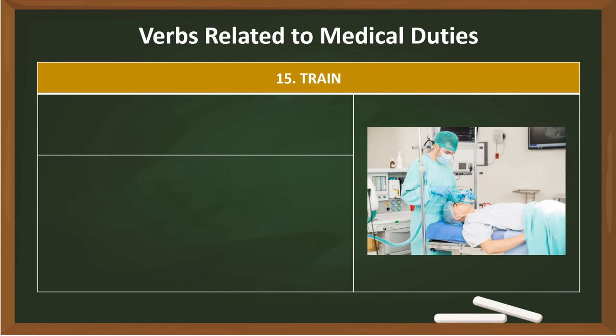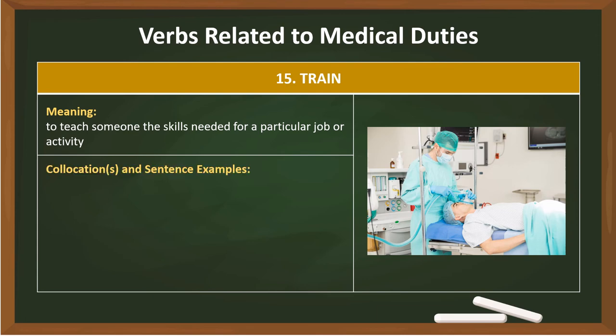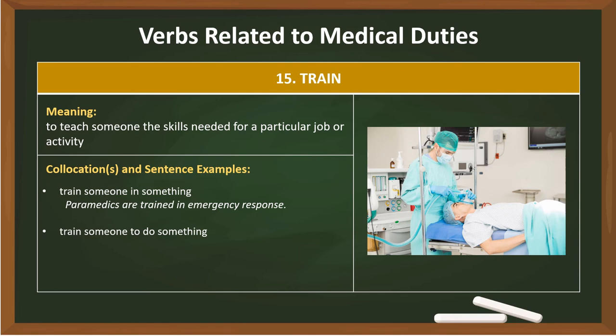15. Train. Meaning: to teach someone the skills needed for a particular job or activity. Collocations: Train someone in something — Paramedics are trained in emergency response. Train someone to do something — Anesthesiologists are trained to manage patients' pain during and after surgery.